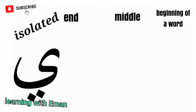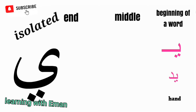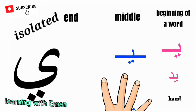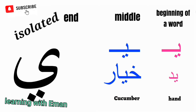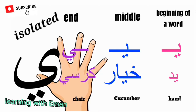Ya is equivalent to the English letter Y. At the beginning of a word, like 'Yad', meaning hand. At the middle of a word, like 'Khiyar', meaning cucumber. At the end of a word, like 'Kursi', meaning chair.